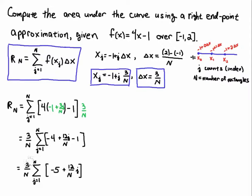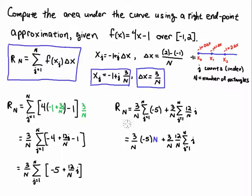Now I need to address splitting this sum. Recall that with a sum of a sum, you just sum up each of the parts. So I'll take three over n times the sum of all the minus fives, and three over n times the sum of all the twelve j over n terms.